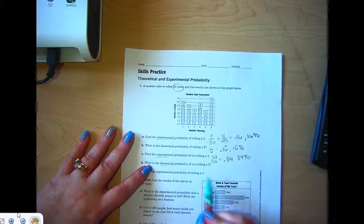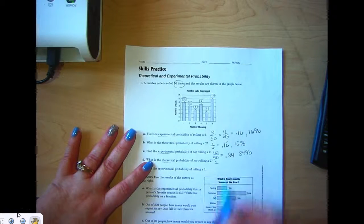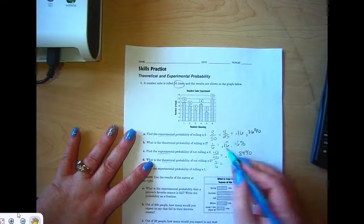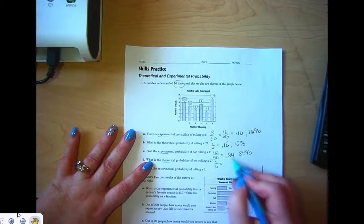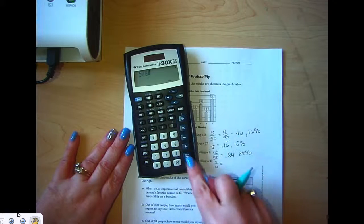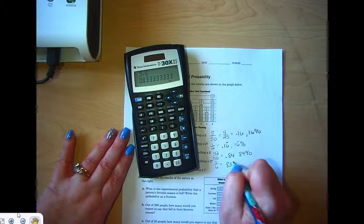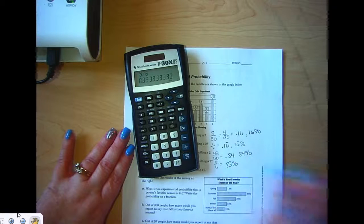What is the theoretical probability of not rolling a 2? Well, five of those sides are not a 2, so 5 out of 6. And again, that should be somewhere around this same number. 5 divided by 6 is 83 percent with that 83 repeating.